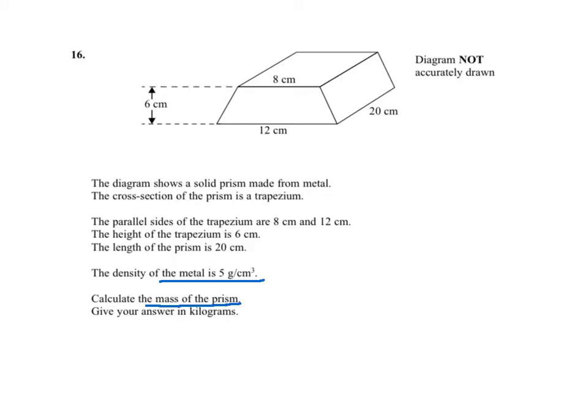Using the formula D equals mass divided by the volume, where D is density. This will give us mass equals the density times the volume of the prism.